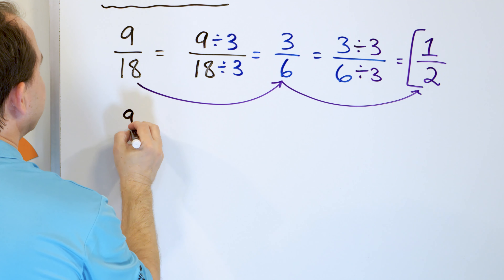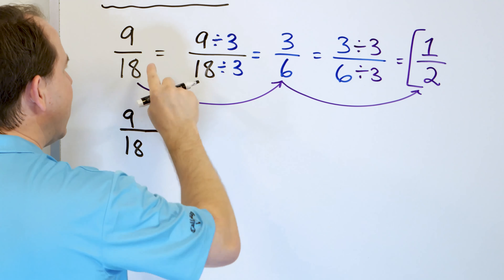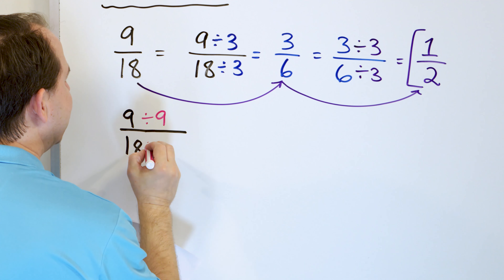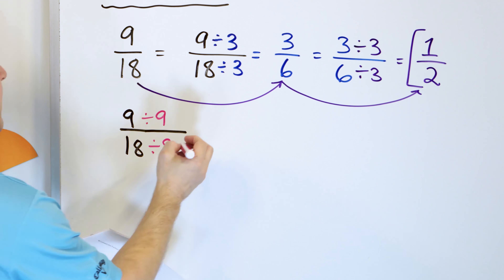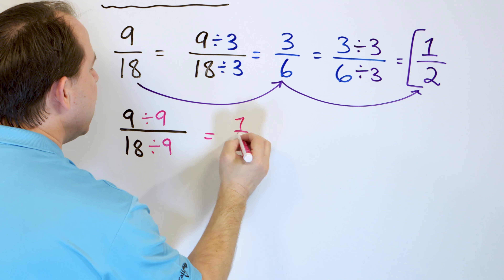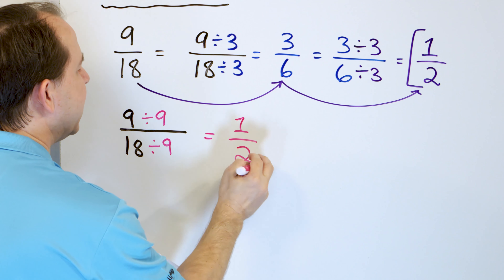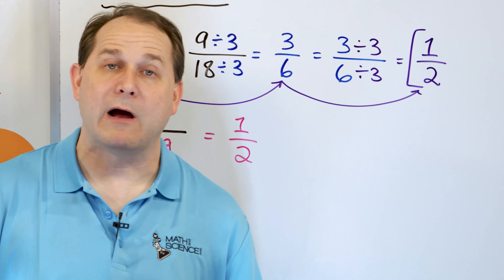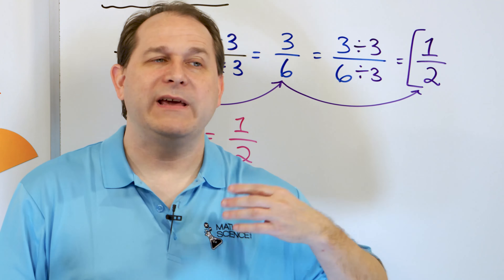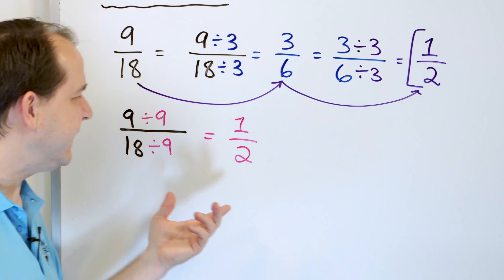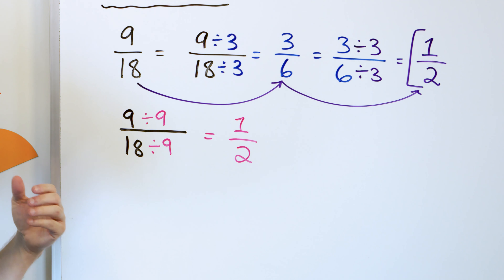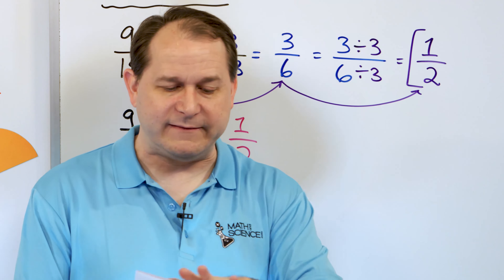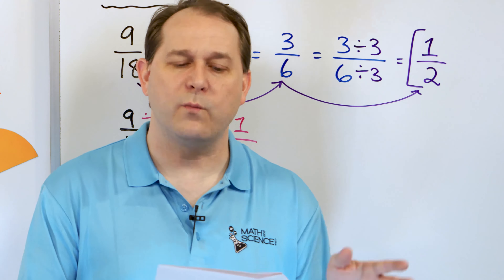Let's quickly do the whole thing again — nine-eighteenths. Notice that it took two steps, so there must be something bigger I can divide by. What about dividing the top by nine and the bottom by nine? Nine divided by nine is one, and eighteen divided by nine is two, because two times nine is eighteen. You get exactly the same answer. I don't care if you see the perfect thing to divide by — there's more than one way to do these problems.